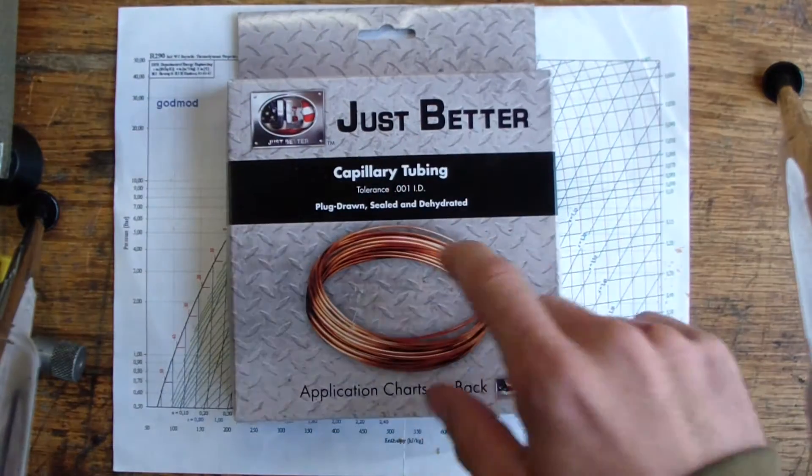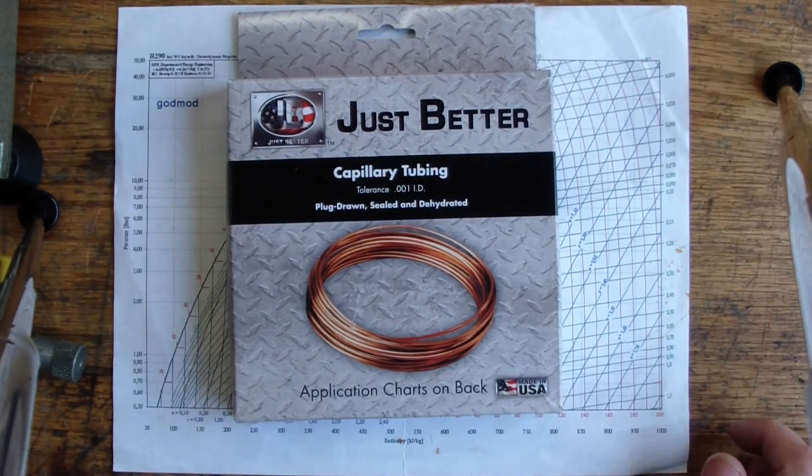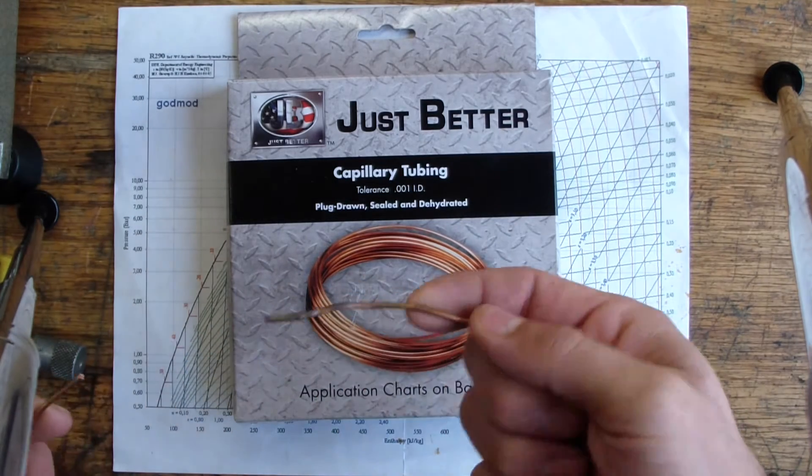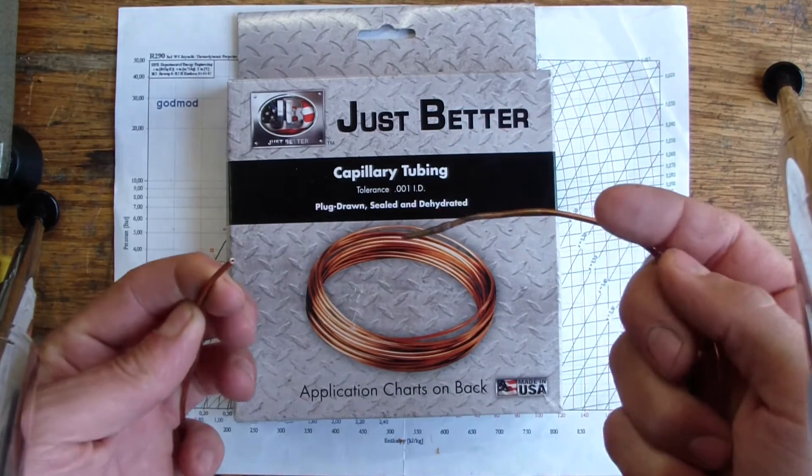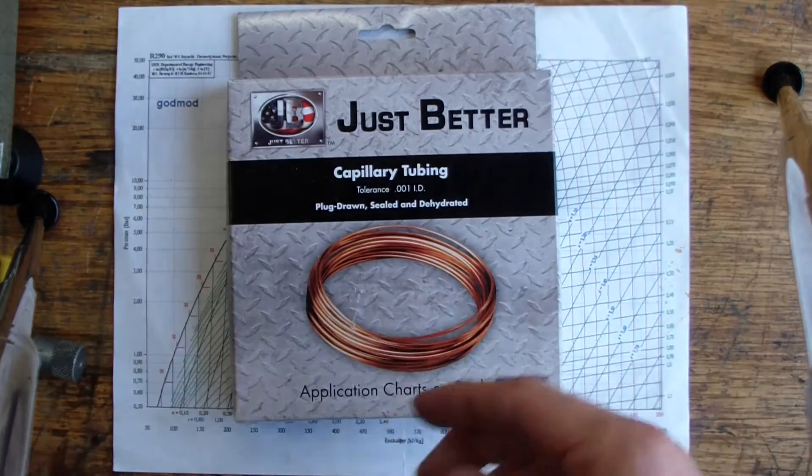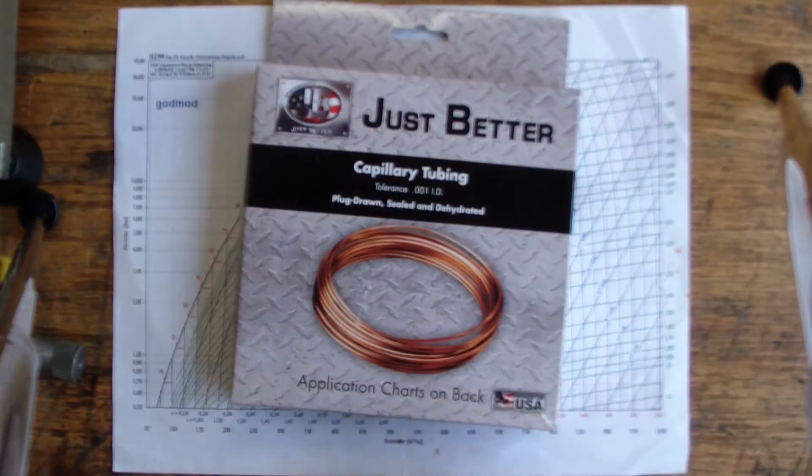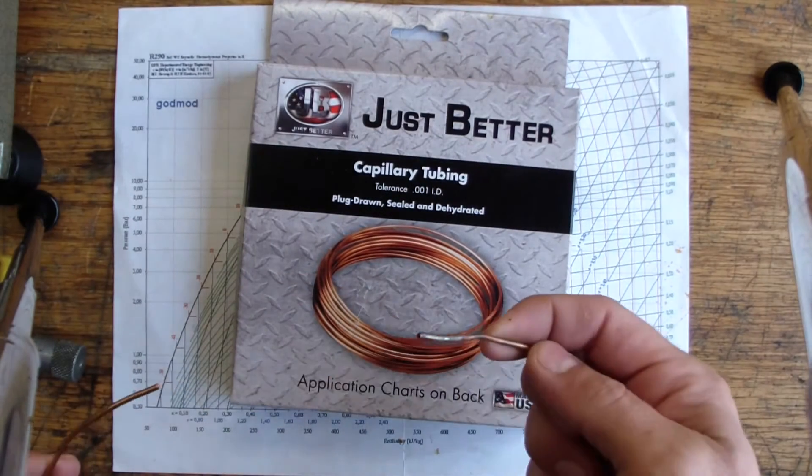So capillary tube, talked about this a little bit in the past. It's what I use currently. It's just long, thin length of copper tubing that's drawn out to have a very, very small inside diameter. This one is 0.036 inches inside diameter.